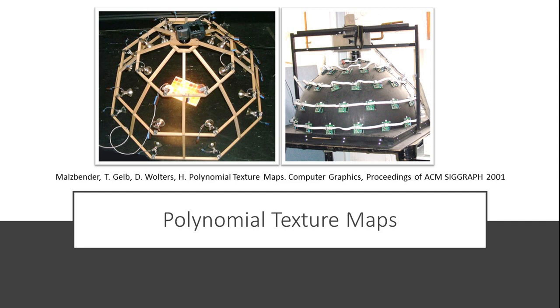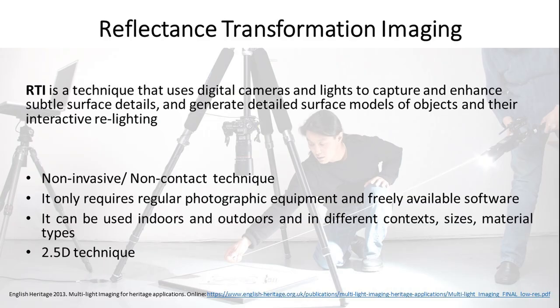These were some of the originally developed hardware to capture polynomial texture maps. As you can see, this hardware consisted of a hemispherical dome with a camera on the top and lights at different positions. Polynomial texture mapping gradually evolved into reflectance transformation imaging, a method adopted for cultural heritage applications. RTI uses digital cameras and lights to capture and enhance subtle surface details and generate detailed surface models of objects and their interactive relighting.